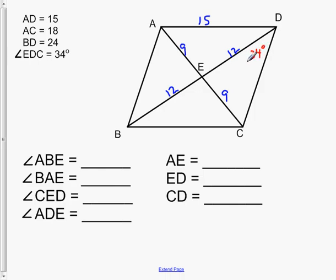And there's so much symmetry in rhombuses. It's just crazy. So if this is 34, this line, the diagonal, is a line of symmetry. So that means that this is also 34.